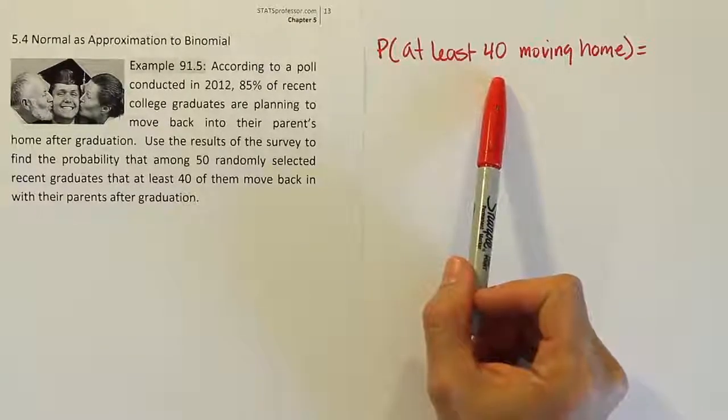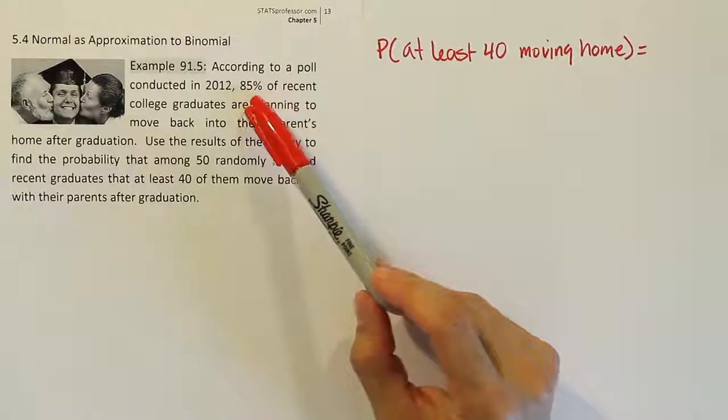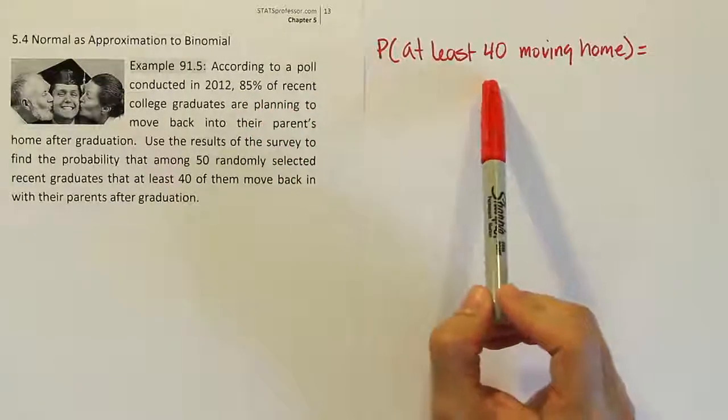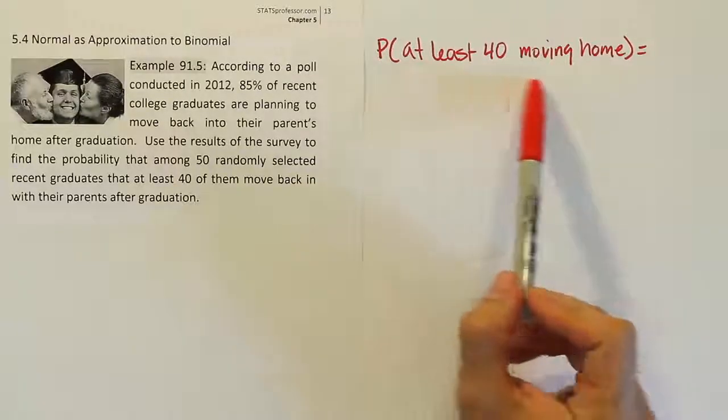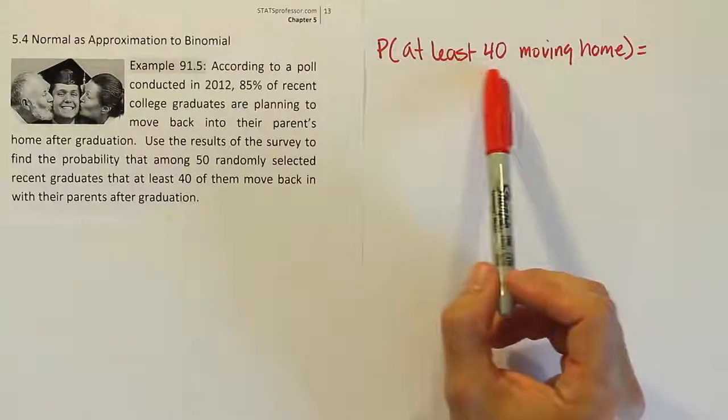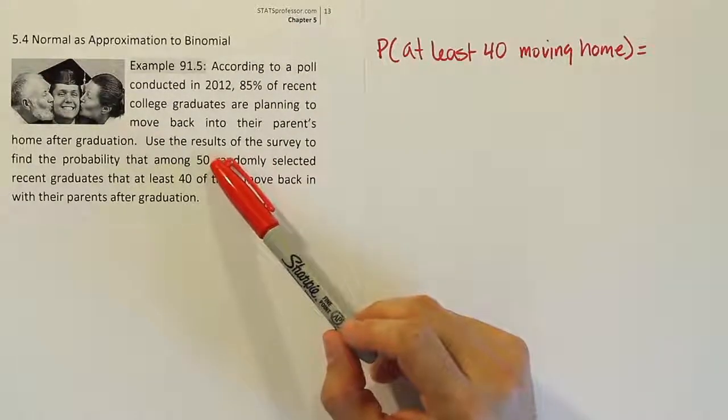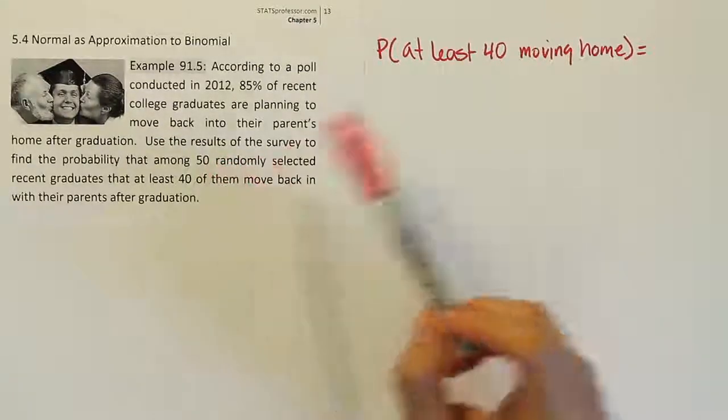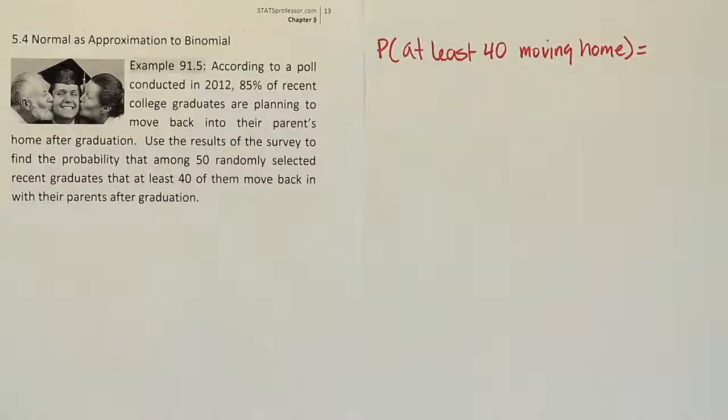If we want to work this out using binomial probability, which I believe this scenario would fit, it would take a lot of work. There's no faster way to do it other than to use either software or a table. But tables don't go up this high. We don't have n's of 50 on the binomial table. If we don't have access to software, we're kind of in trouble. It'll take very long to do all the calculations by hand.